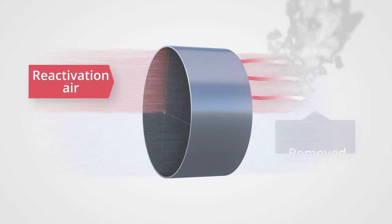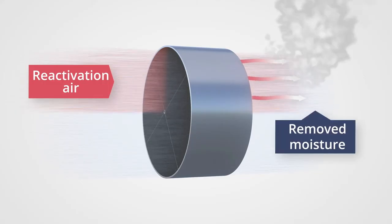Now what happens is that all the moisture that was collected from the process air is now drawn out of the wheel as it passes through the hot reactivation section of the wheel.